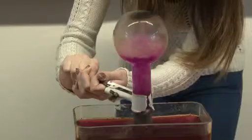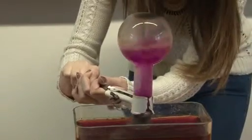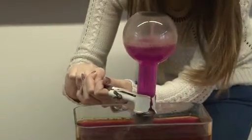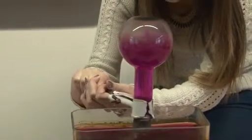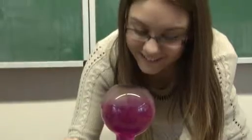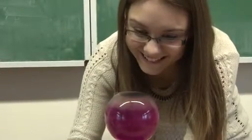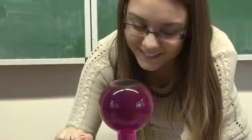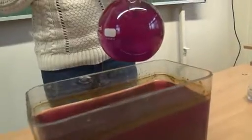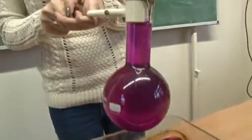Ahogy a víz feljut a lombikba az üvegcsövön keresztül, a lombikban még mindig maradt vízgőz a hideg víz miatt hirtelen kicsapódik. Így a nyomás a lombikban drasztikusan csökken. Ezzel együtt a szobahőmérsékletű víz azonnal felforr a lombikban. A nyomáscsökkenés miatt a külső légnyomás továbbra is felnyomja a vizet, gyakorlatilag megtölti az edényt, miközben még mindig tovább forr a víz.